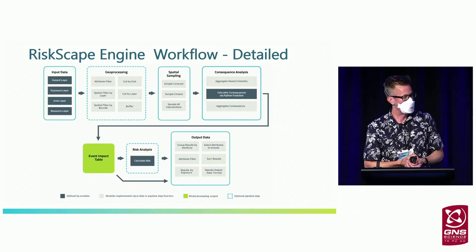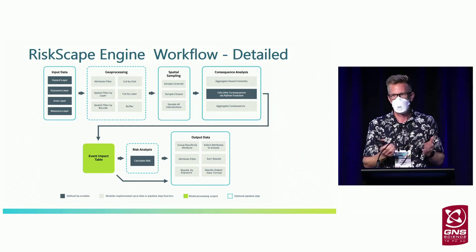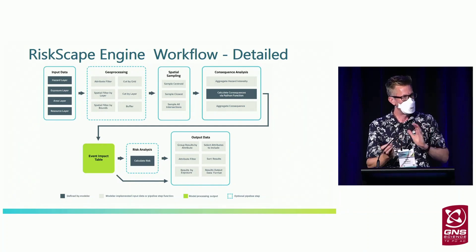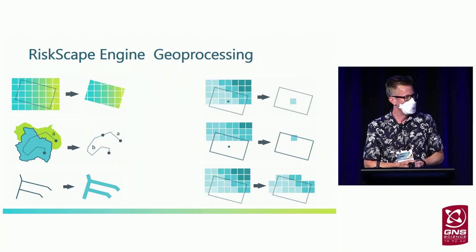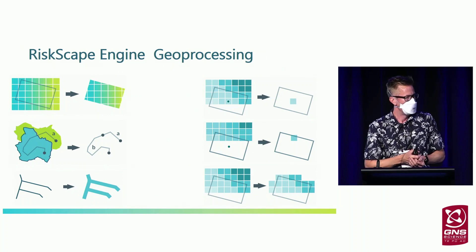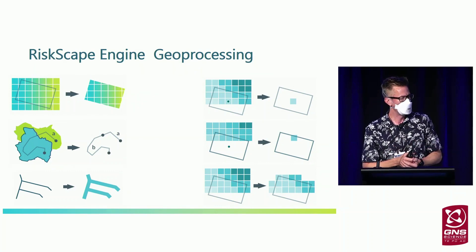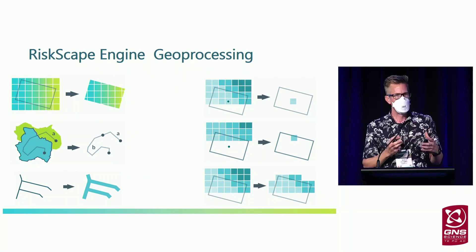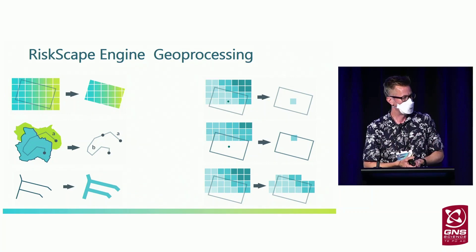For those who want the details, there are many different geoprocessing, spatial sampling, and consequence analysis techniques that can be drawn on — think of these as different tools in a toolbox that a user assembles into a workflow. Key to what we've done is enhanced geoprocessing techniques. When looking at hazards of different scales — a flood at metre resolution at individual buildings, or an earthquake affecting the whole country — we need different ways to process that data. We have a large toolbox of geoprocessing techniques to model exposure to hazards realistically across the country.